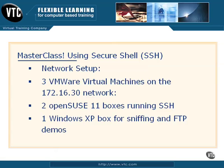I want to give you a brief overview of how the network is going to be set up. We're using three VMware virtual machines on the 172.16.30 network. We're going to have three boxes on the network: two OpenSUSE 11 Linux boxes running Secure Shell, and also a Windows XP box.